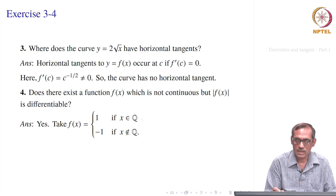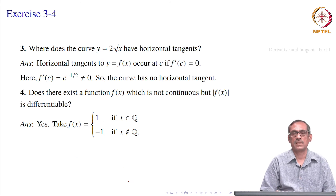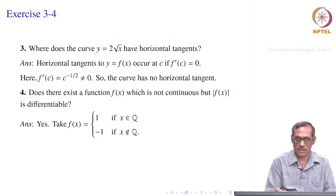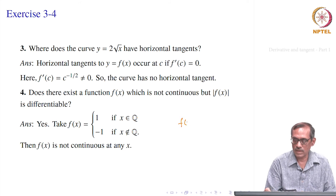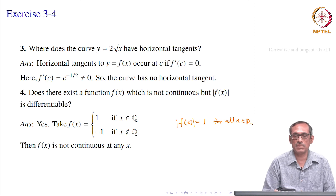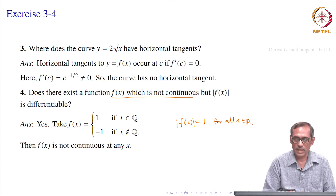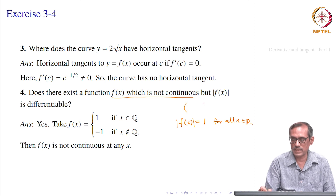Define f(x) equal to 1 if x is rational, and minus 1 if x is irrational. It is defined throughout the real numbers. When you take its absolute value: when x is rational, absolute value is 1; when x is irrational, absolute value of minus 1 is also 1. So mod f(x) equals 1 for all x — it is a constant function, hence differentiable. And this is actually a stronger result: on any interval, not just all of R, this function is nowhere continuous.